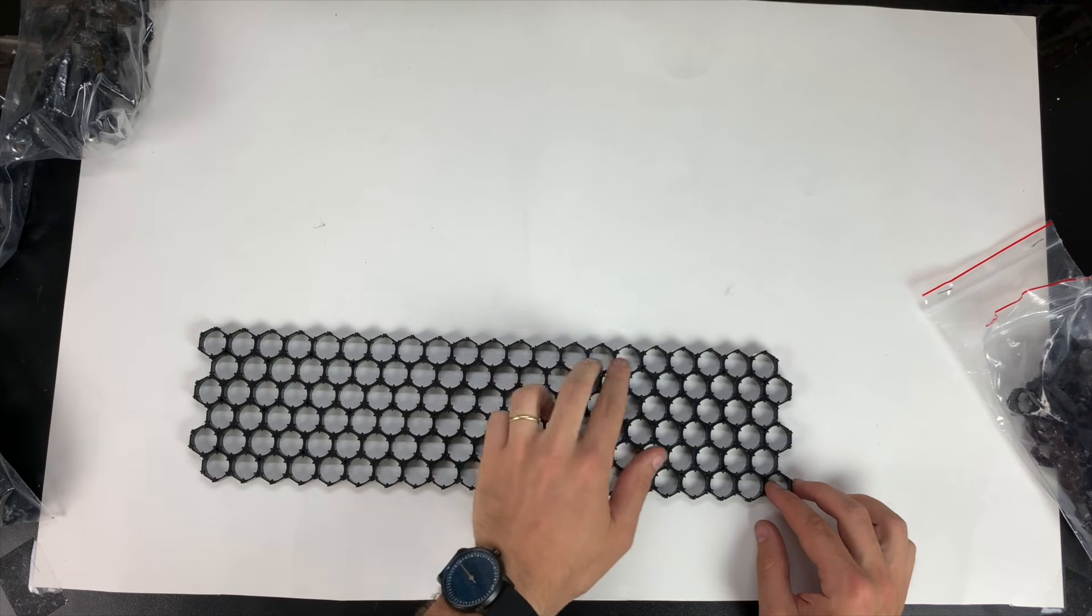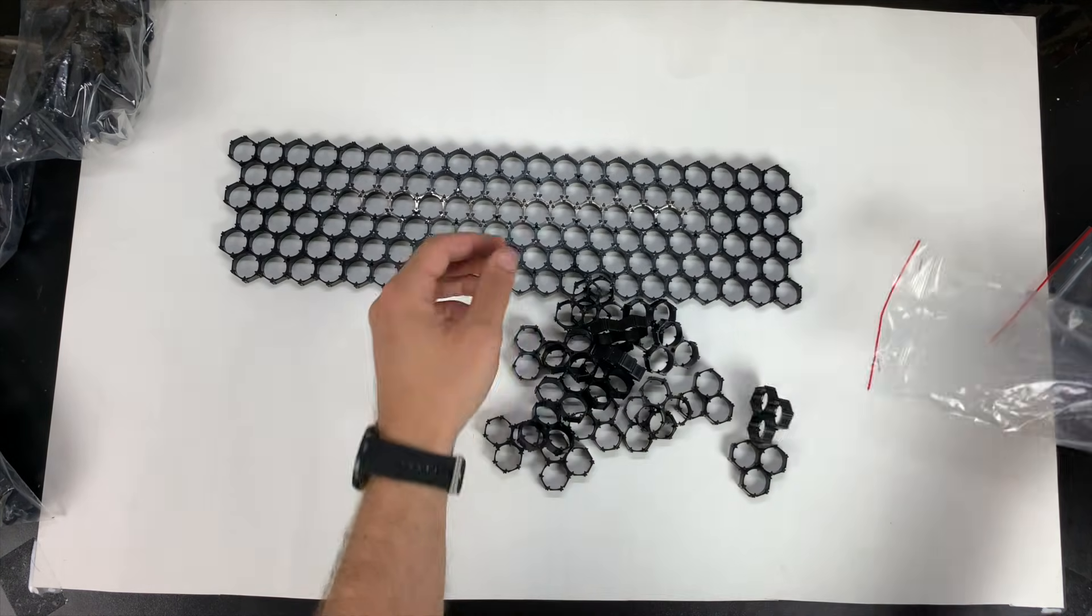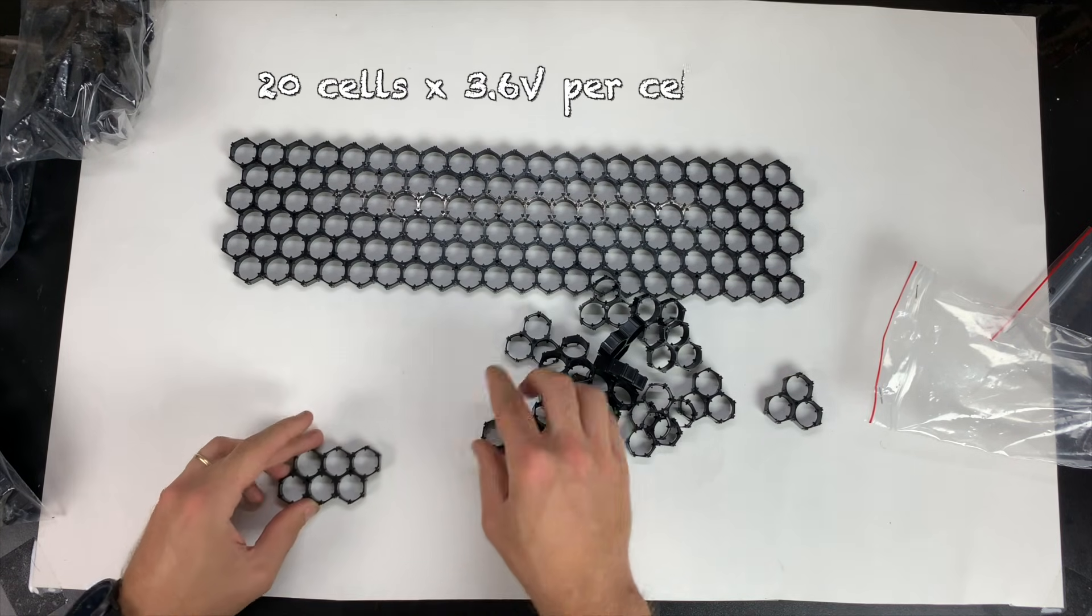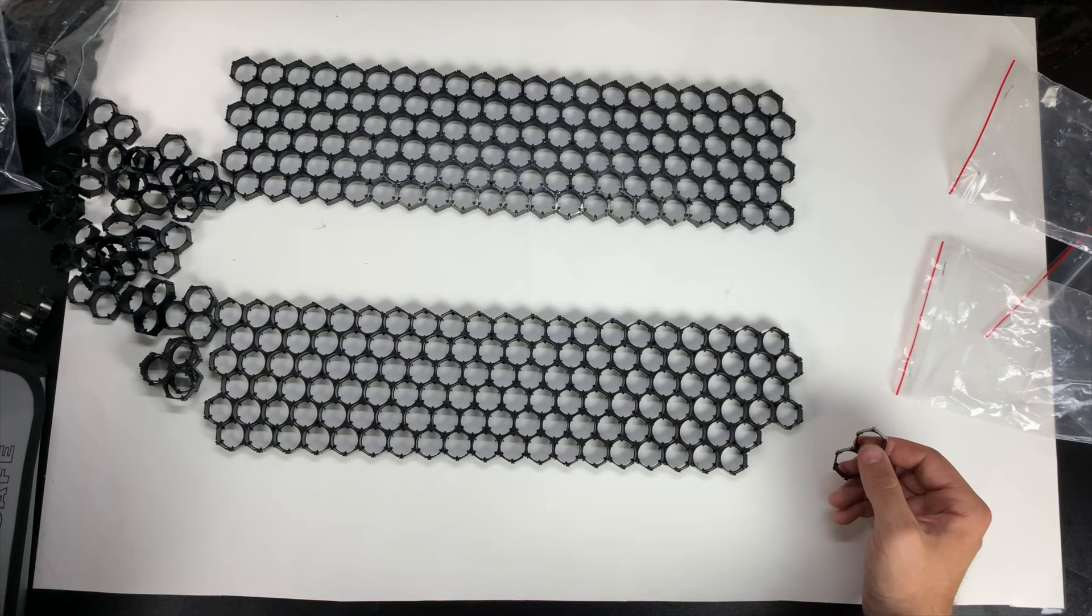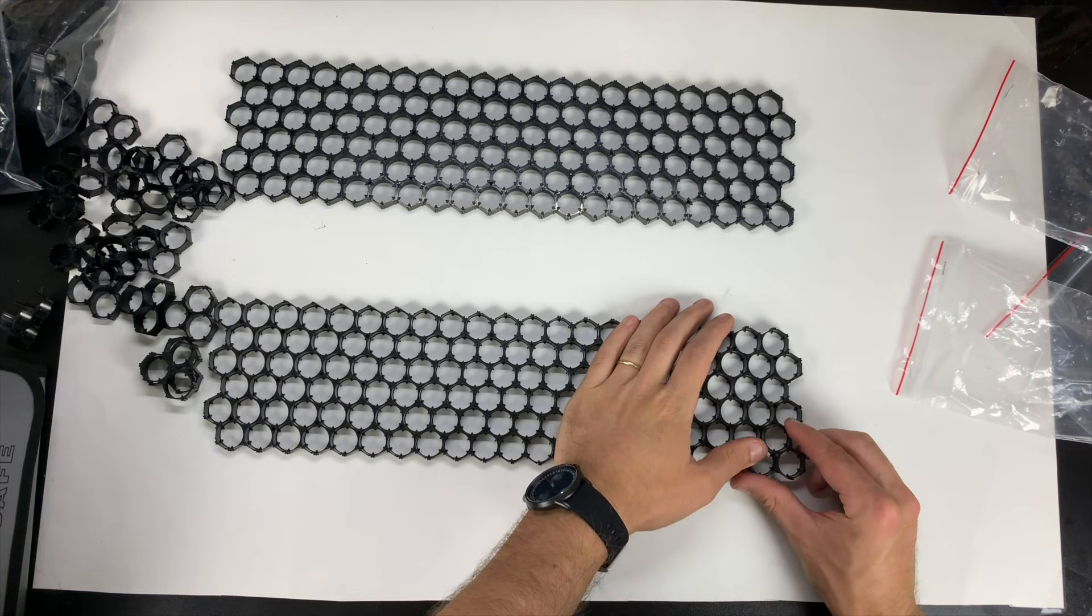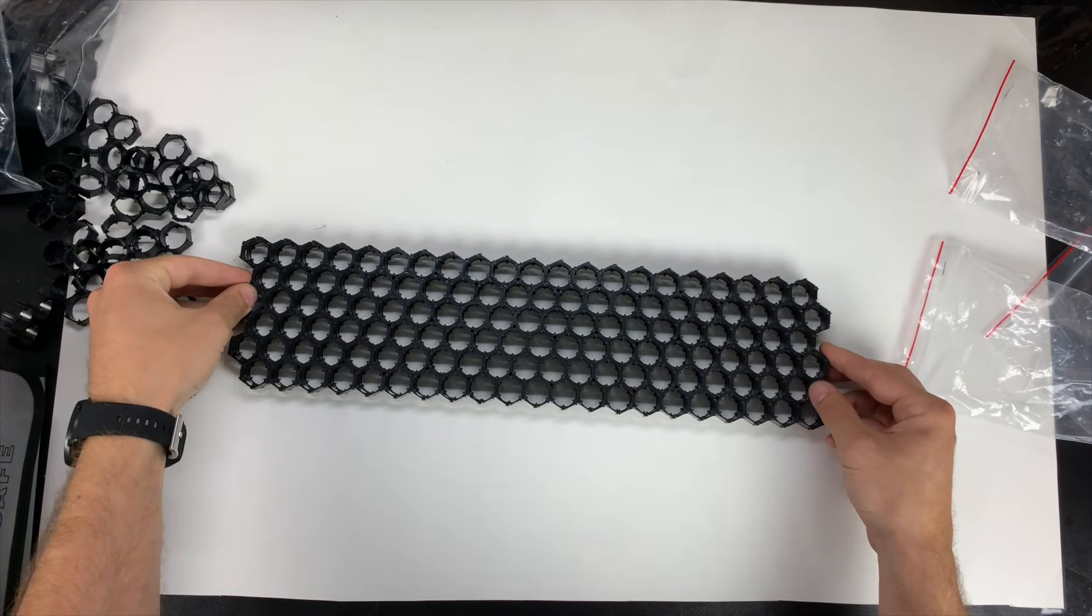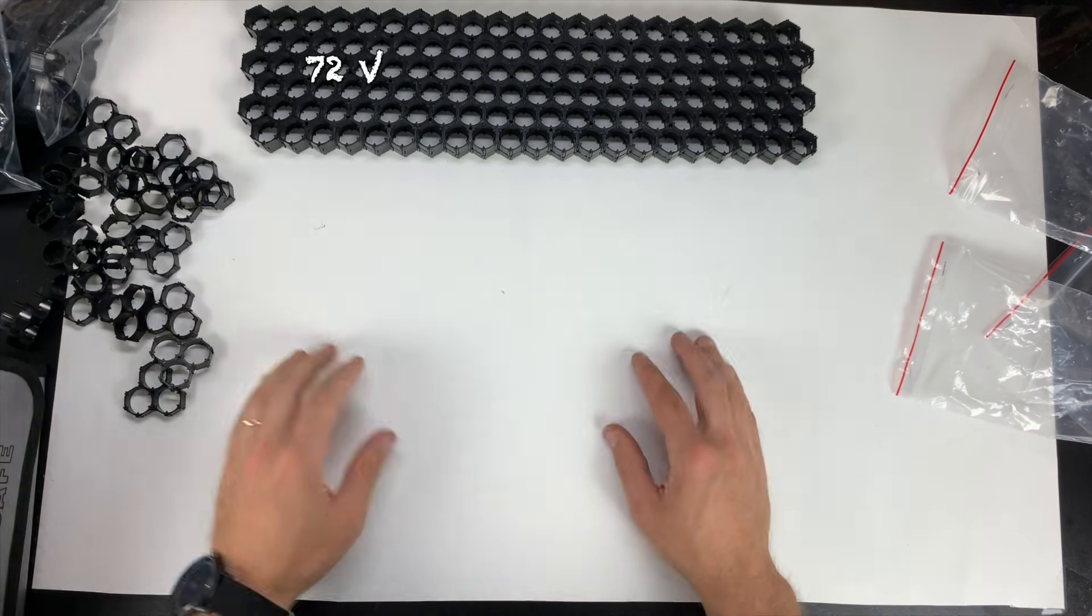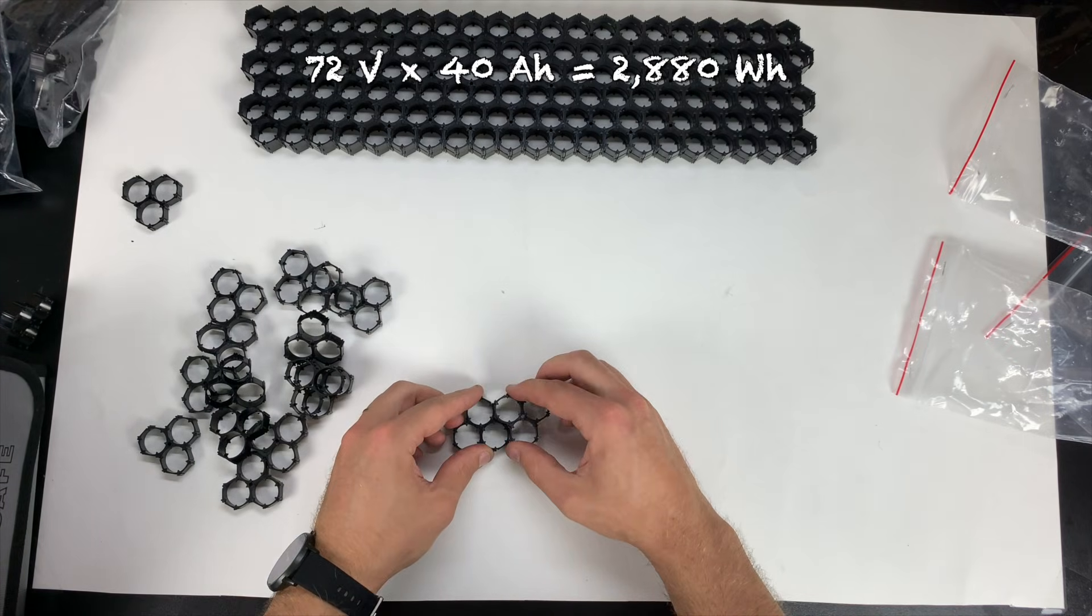I'm going to build a 72-volt battery, which means my rows here are 20 cells long, to give me a 20S battery, or 20 cells in series. That means my final pack voltage will be 72 volts, since 20 cells times 3.6 volts per cell gives me that 72 volts. For capacity, I'm going to have 12 cells in parallel, and since these are 3.5 amp hour LG MJ1 cells, that means I'll end up with about 3.5 amp hours times 12 cells in parallel, which equals 42 amp hours, or probably more like 40 amp hours in the real world. Thus, the final capacity of my pack is going to be 72 volts times 40 amp hours equals 2,880 watt hours, or 2.88 kilowatt hours.